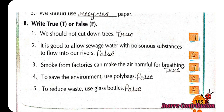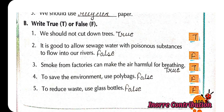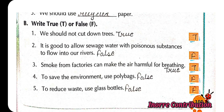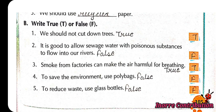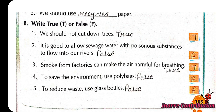True or false. First: we should not cut down trees — True. Second: it is good to allow sewage water with poisonous substances to flow into our rivers — False. Third: smoke from factories can make the air harmful for breathing — True. Fourth: to save the environment, use poly bags — False. Fifth: to reduce waste, use glass bottles — False.